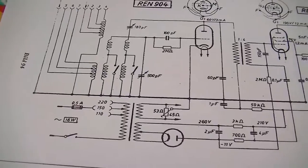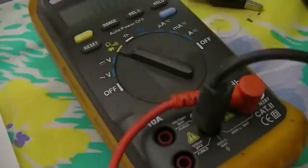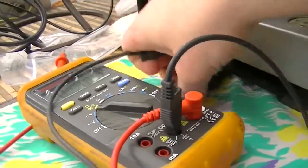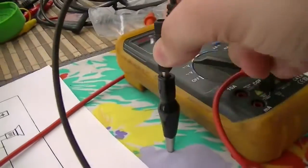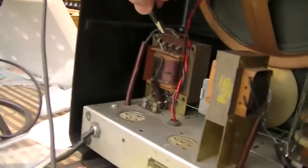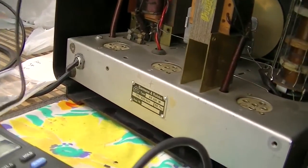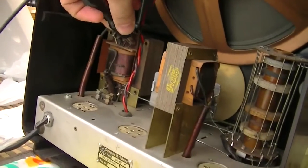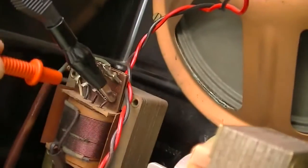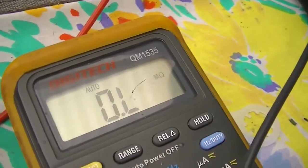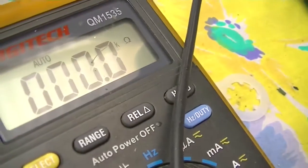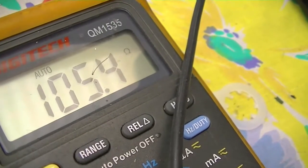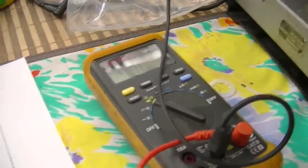All right, what am I going to check next? I'm gonna check the primary of that transformer. Pardon me while I swap things around. All right, pop that there. Humans should be born with a third arm. Let's put that on the resistance. There we go, about a hundred or so ohms. Primary is good.